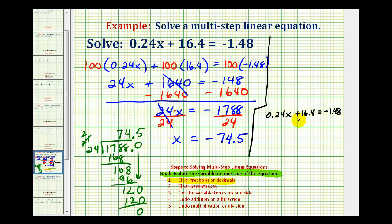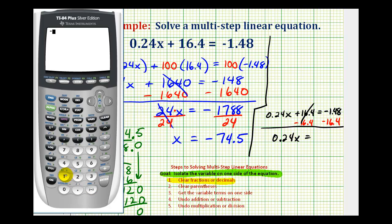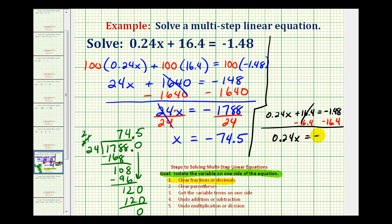In order to isolate x, we could subtract sixteen point four. So this would be zero, we would have zero point two four x equals this difference, which we'll do on the calculator. So we have negative seventeen point eight eight. And then the last step would be to divide by zero point two four.